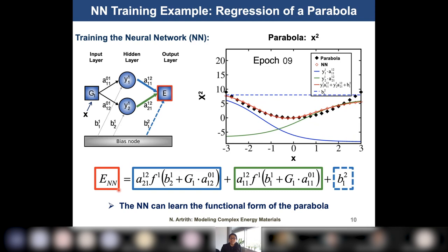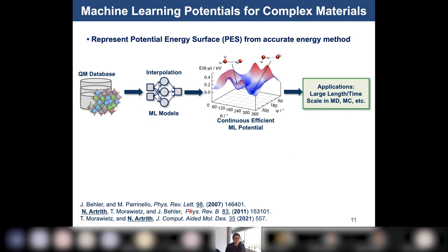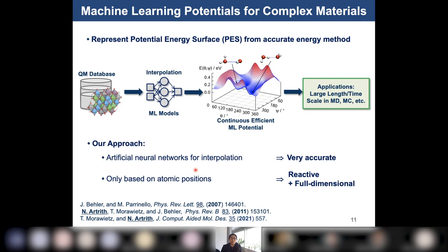In realistic materials, the database contains many different atoms and many different types of structures like molecules and surfaces. We use the same idea: take the quantum database and use machine learning to interpolate and construct efficient and accurate machine learning potentials, then use them in applications at larger time and length scales in MD and MC simulations. We use neural networks because they can represent the database very accurately and handle very large datasets — like a million data points.